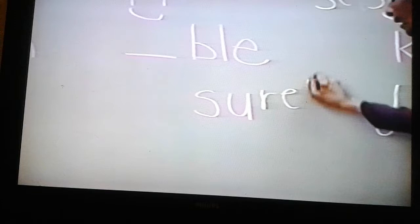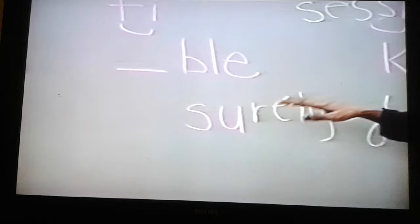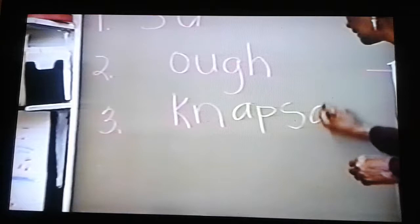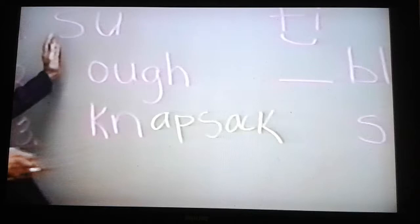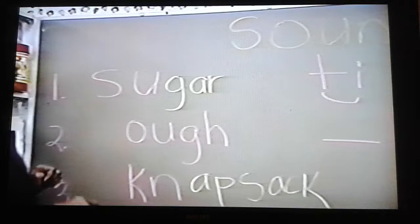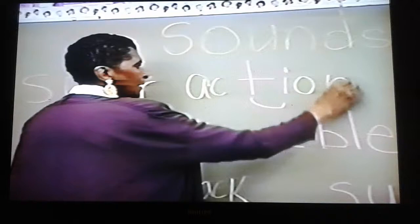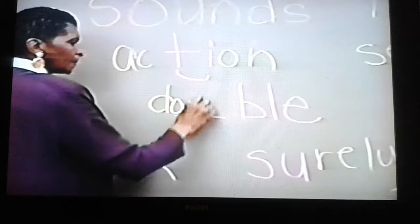Here we have S-U as in 'surely,' 'insurance,' 'sugar.' Here we have the K-N as in knapsack. Here we have S-U as in sugar. Here we have the T-I as in action. Here we have the B-L-E as in double. Here we have the O-U-G-H as in dough.